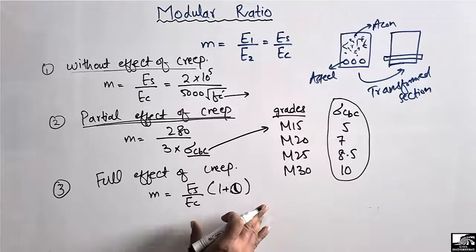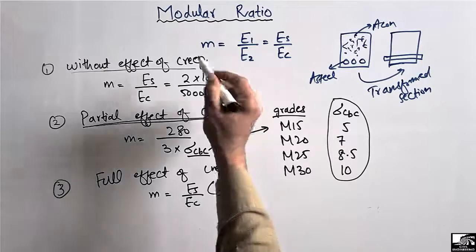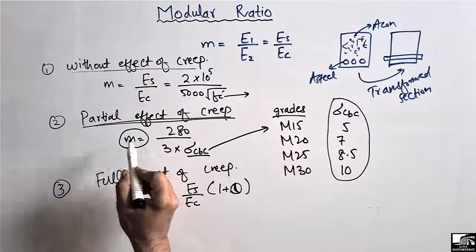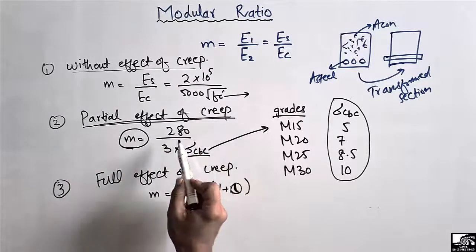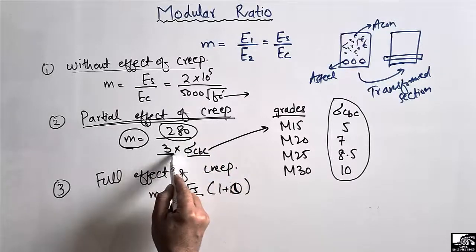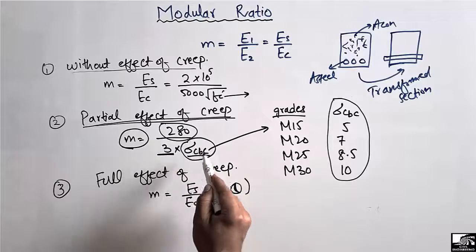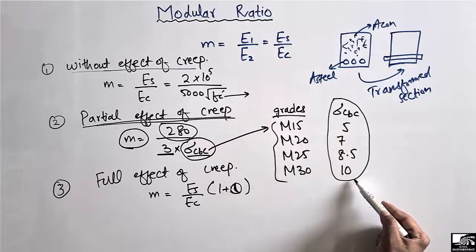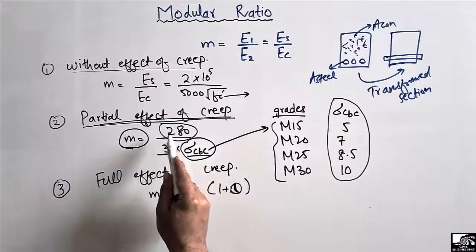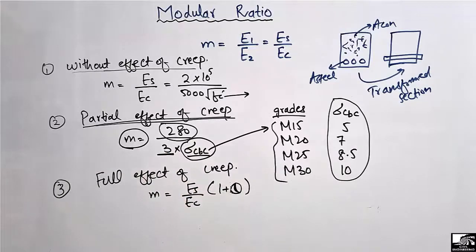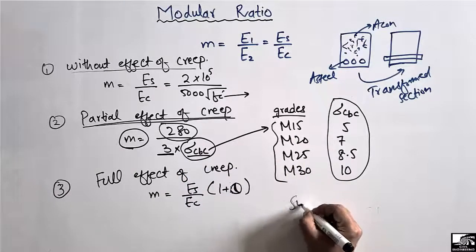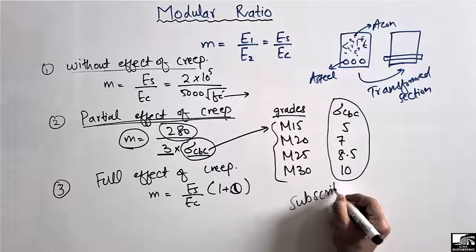These are the three formulas to determine the modular ratio. In design practice, we mostly use the second formula — m = 280 / (3 × σcbc) — because it partially accounts for creep. By knowing the constants 280 and 3, and finding σcbc from the table for the relevant concrete grade, we can easily calculate the modular ratio for any steel-concrete beam section.